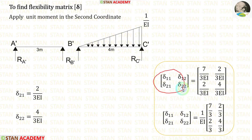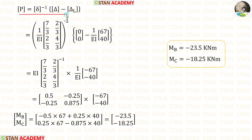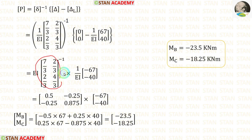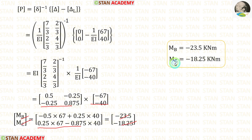We have now found both rows of the flexibility matrix. Applying the values with 1/EI kept as a common factor outside, we add the two matrices. Then (1/EI) inverse equals EI, which cancels out. We find the inverse of the resulting matrix using a calculator, then multiply by the delta L matrix. After multiplying, we obtain the final moments MB and MC. In this analysis, we have calculated both final moments.